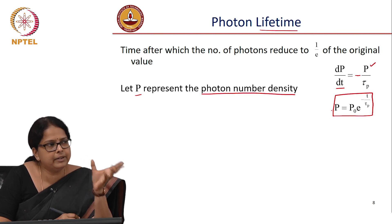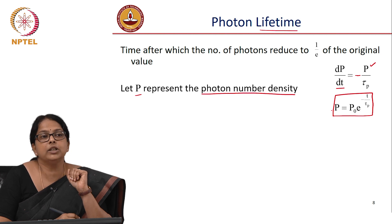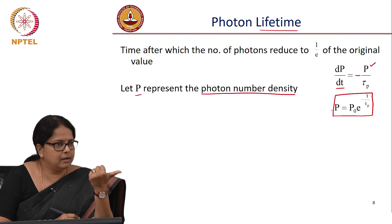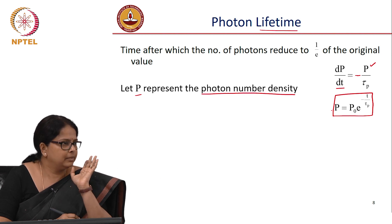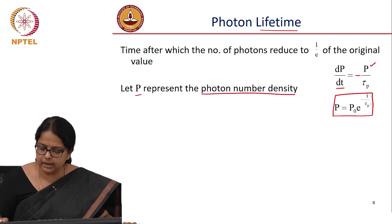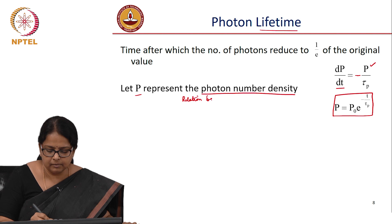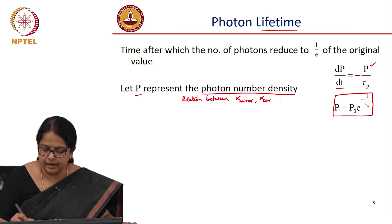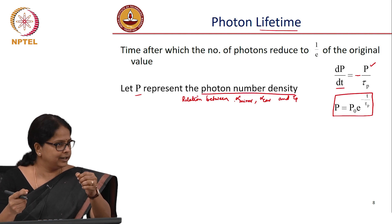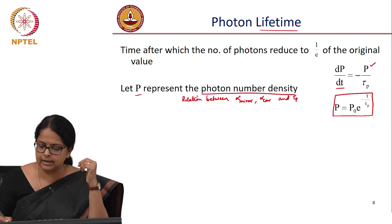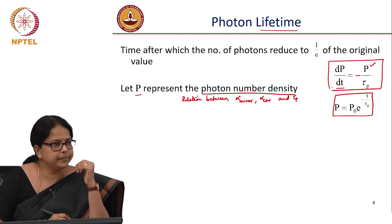The question is how do I relate τ_p to the cavity parameters — R1, R2, α_cavity — which I can write as α_cavity plus α_mirror. That is why the α_mirror definition is going to be useful. The objective is to find the relation between α_mirror, α_cavity, and τ_p, because α_mirror and α_cavity are measurable quantities. τ_p is a derived quantity, but it is useful because this equation exactly tells me how the photons are decaying in the system, and I will need this equation later.